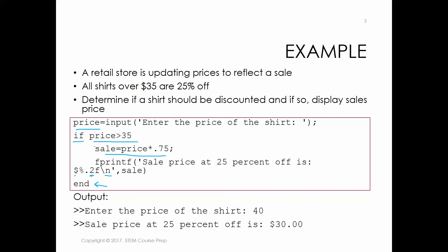MATLAB will automatically indent your lines inside of the if statement. If you run this and enter a price of $40, MATLAB is going to say the sales price at 25% off is $30. It'll tell you the price of the shirt if it needs to be on sale; otherwise, it skips over all of that completely. If you put in a shirt price of $10, none of this would have been done — it would have checked and said 'if 10 is greater than 35' — that would have been a false statement, so it would have just gone to the end statement and moved to the next line of code.